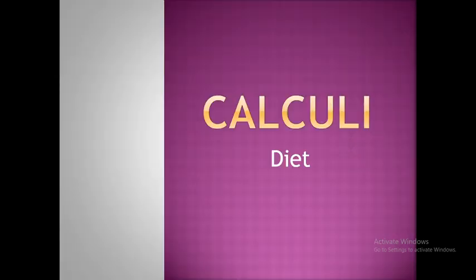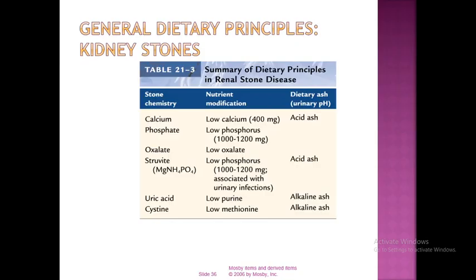For the calculi diet, when kidney stones are present, general dietary principles apply. A dietary prescription table is available. Normally, calcium, phosphate, oxalate, struvite, uric acid, and cysteine should be kept low in every case.